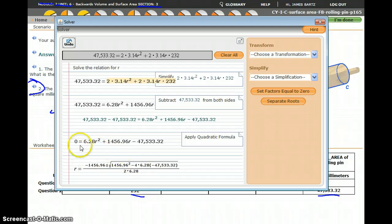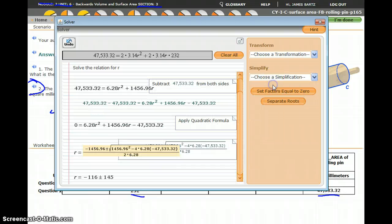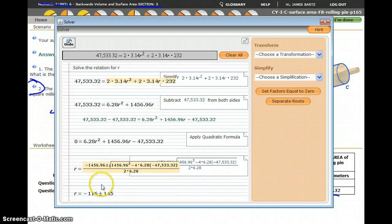So that puts all the values into the quadratic formula, and again, I'm going to just go under simplify, and I'm going to completely simplify. When solving quadratic equations, a lot of times we're going to get two answers. And so I have r equals negative 116 plus or minus 145.